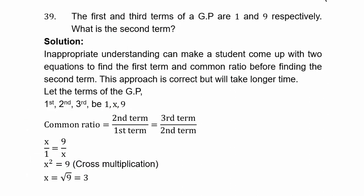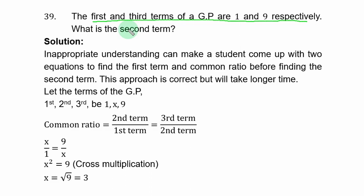Example 39: the first and third terms of a geometric progression are 1 and 9 respectively. What is the second term?